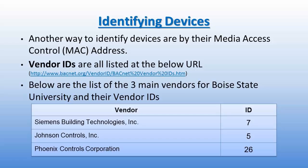Below is a list of the three main vendors for Boise State University and their vendor IDs. Siemens Building Technologies has a vendor ID of 7, Johnson Controls is 5, and Phoenix Control Corporation is 26.